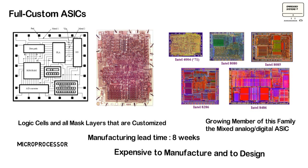Customizing all of the integrated circuit features in this way allows the designer to include analog circuits, optimized memory cells, or mechanical structures. Full custom designed integrated circuits are the most expensive to manufacture and to design. Manufacturing lead time — that means the time required just to make an integrated circuit, not including design time — is typically eight weeks for a full custom integrated circuit.